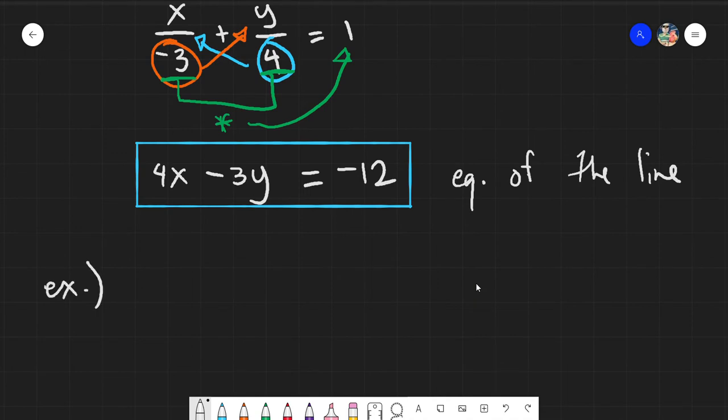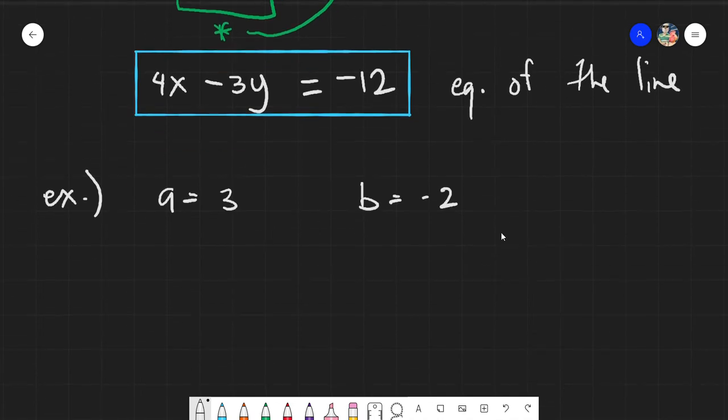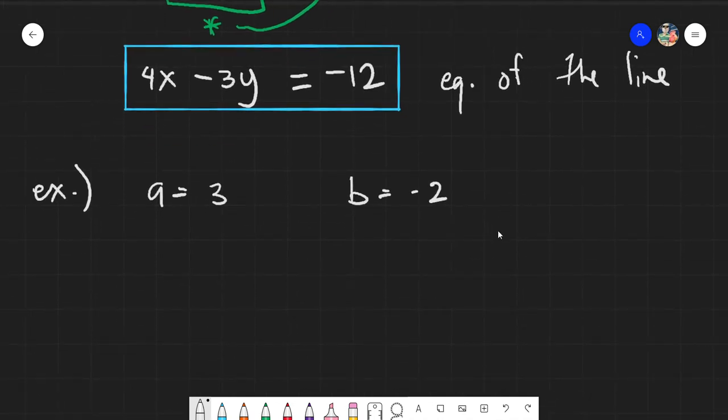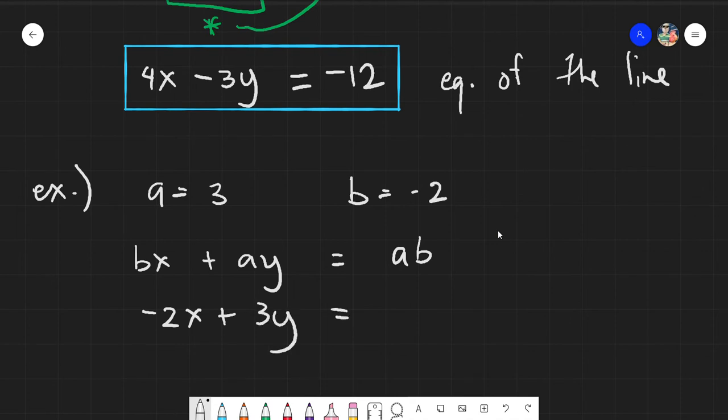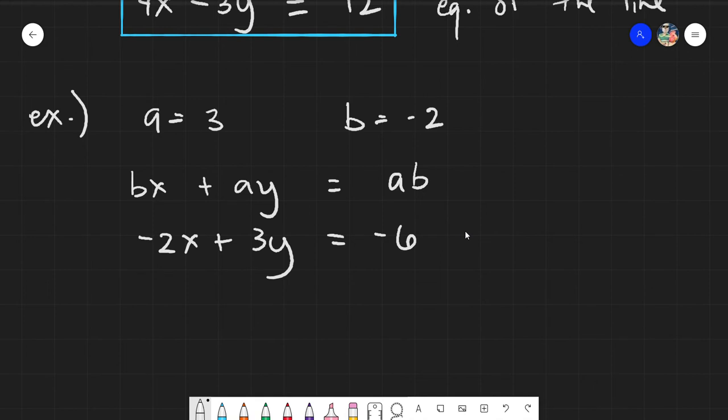Okay, so our a, say, is 3 and our b is negative 2. So actually, I have a shortcut here. What I do is bx plus ay equals ab multiplication. So the b will go to the x, so negative 2x. The y will be ay, so 3y. And the ab, we will multiply these two, so we will multiply 3 and negative 2, giving us negative 6. And again, for aesthetics, to make it look nice, we will change the sign of x as positive and change the sign of everything. So this would be negative 3y and positive 6. And this would be your equation of the line.